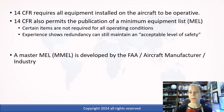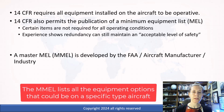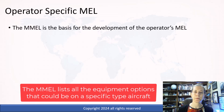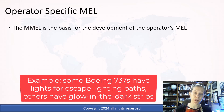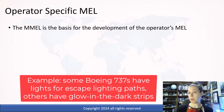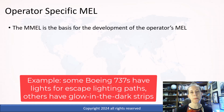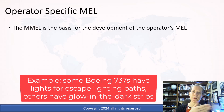Embraer, Bombardier — they will develop a master MEL, so MMEL. They put this thing together and then each airline, each air carrier can go in and develop their own specific MEL. It's going to be specific to their aircraft, what's installed in their aircraft type in their fleet. Sometimes you have various differences even within the fleet, so the operator's MEL can get really specific down to even listing tail numbers.